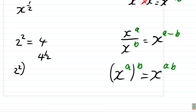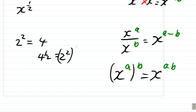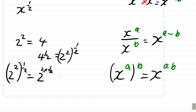4 to the half is really 2 squared to the half. Now, 2 to the 2, all of that to the half — based on the third law of indices, x to the a, all of that to the b, is x to the a times b. So 2 to the 2, all of that to the half, is 2 to the 2 times half. 2 times half is 1, so it's 2 to the 1. And we saw from our previous video that 2 to the 1 is equal to 2.